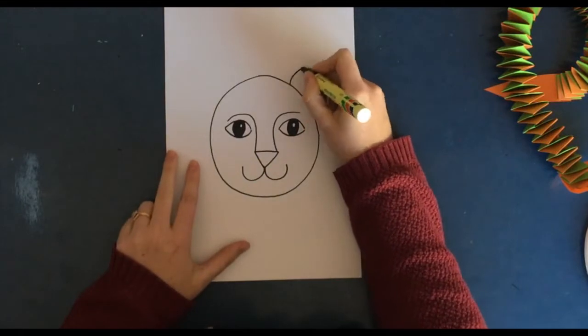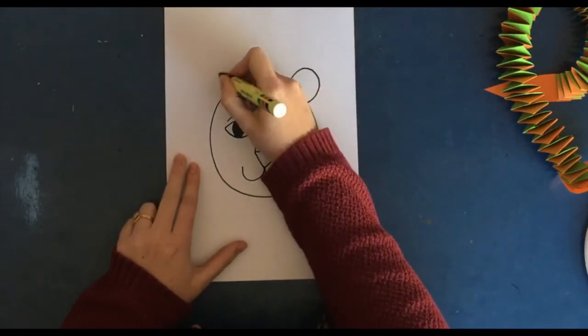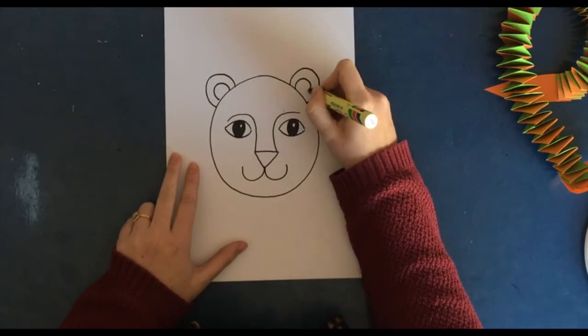At the top of the lion's head we need to add the ears. So draw two half circles at the top for the ears, and then you can draw two inner ears as well.